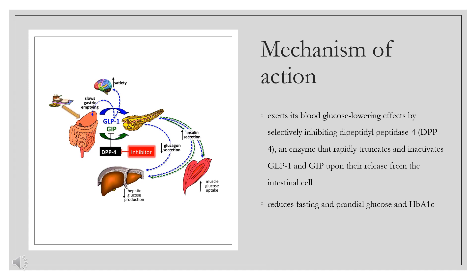Saxagliptin forms a reversible, histidine-assisted covalent bond between its nitrile group and the S630-hydroxyl oxygen on DPP-4. The inhibition of DPP-4 increases active levels of glucagon-like peptide-1 (GLP-1), which inhibits glucagon production from pancreatic alpha cells and increases production of insulin from pancreatic beta cells.